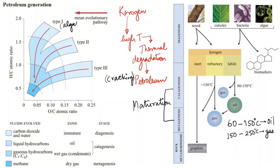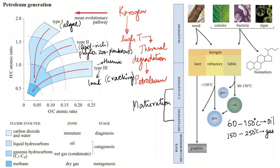Type one is algal-rich kerogen derived from algal material. Type two is lipid-rich kerogen derived from phyto- and zooplanktons. Type three is humic kerogen derived from land plants. In the next lecture, we shall see how the different types of kerogen generate the various types of petroleum, and then we shall move ahead to the migration of petroleum.